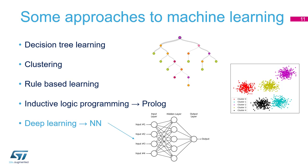At ST, we are also using decision tree learning and clustering. We have algorithms on our sensors — for instance, sensors which embed some decision tree learning inside. So this is AI, we call it AI, this is machine learning, but in this case it's not neural network. Now we will dig a little bit more into the deep learning neural network part.